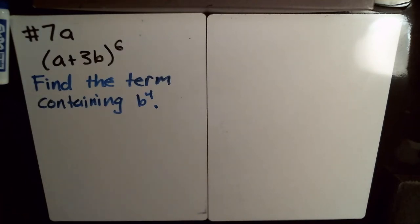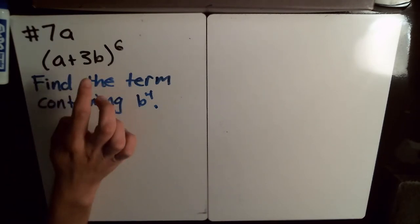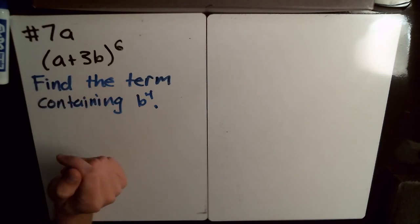Okay, welcome back. So I'm now looking at number 7, the first part of number 7. We're going to be finding the term of this expanded polynomial here that contains b to the 4th.